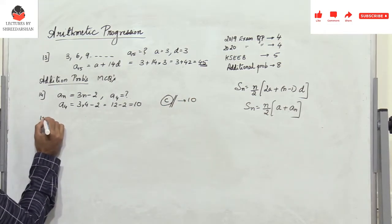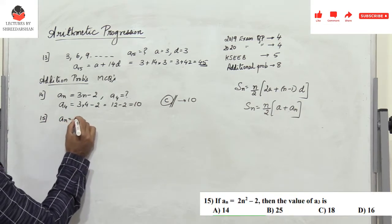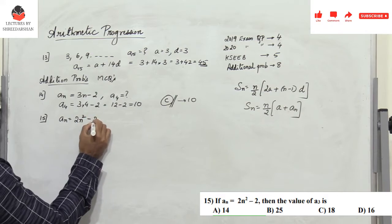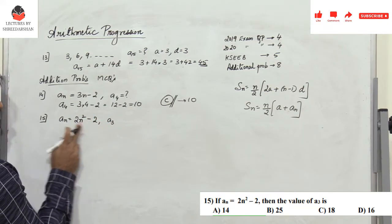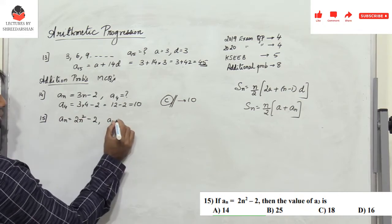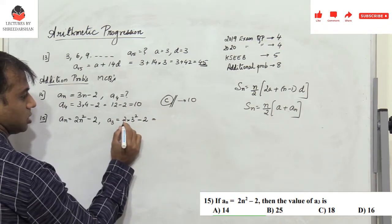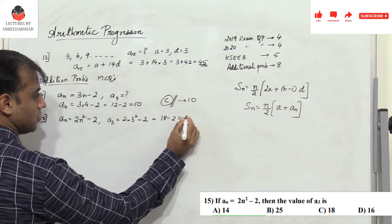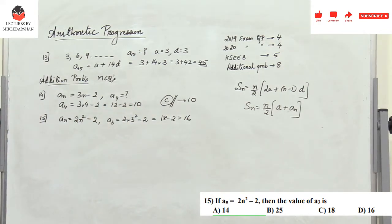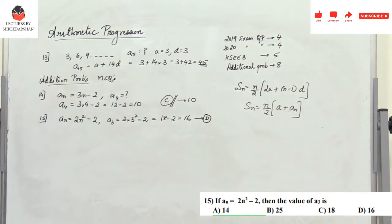Problem 15: aₙ = 2n² - 2, find a₃. Substitute n = 3: 2×9 - 2 = 18 - 2 = 16. Checking all four options, 16 corresponds to option D. So D is the right answer.